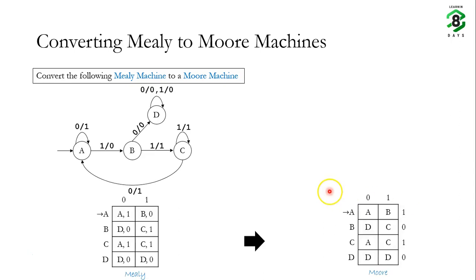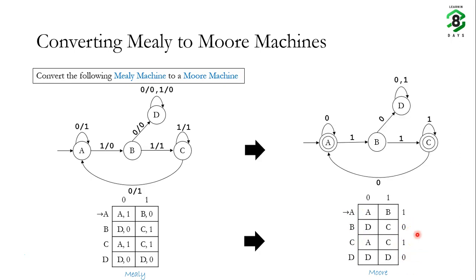There is a small problem. In a Moore machine, states that produce output 1 upon entry are treated as final states. So states A and C are final states, while states B and D are non-final states. In the corresponding diagram, A and C are depicted as final states. Note that we do not write the output part in a Moore machine diagram, since Moore machines indicate output through final states. Now, since A is both a final state and the initial state, a question arises.